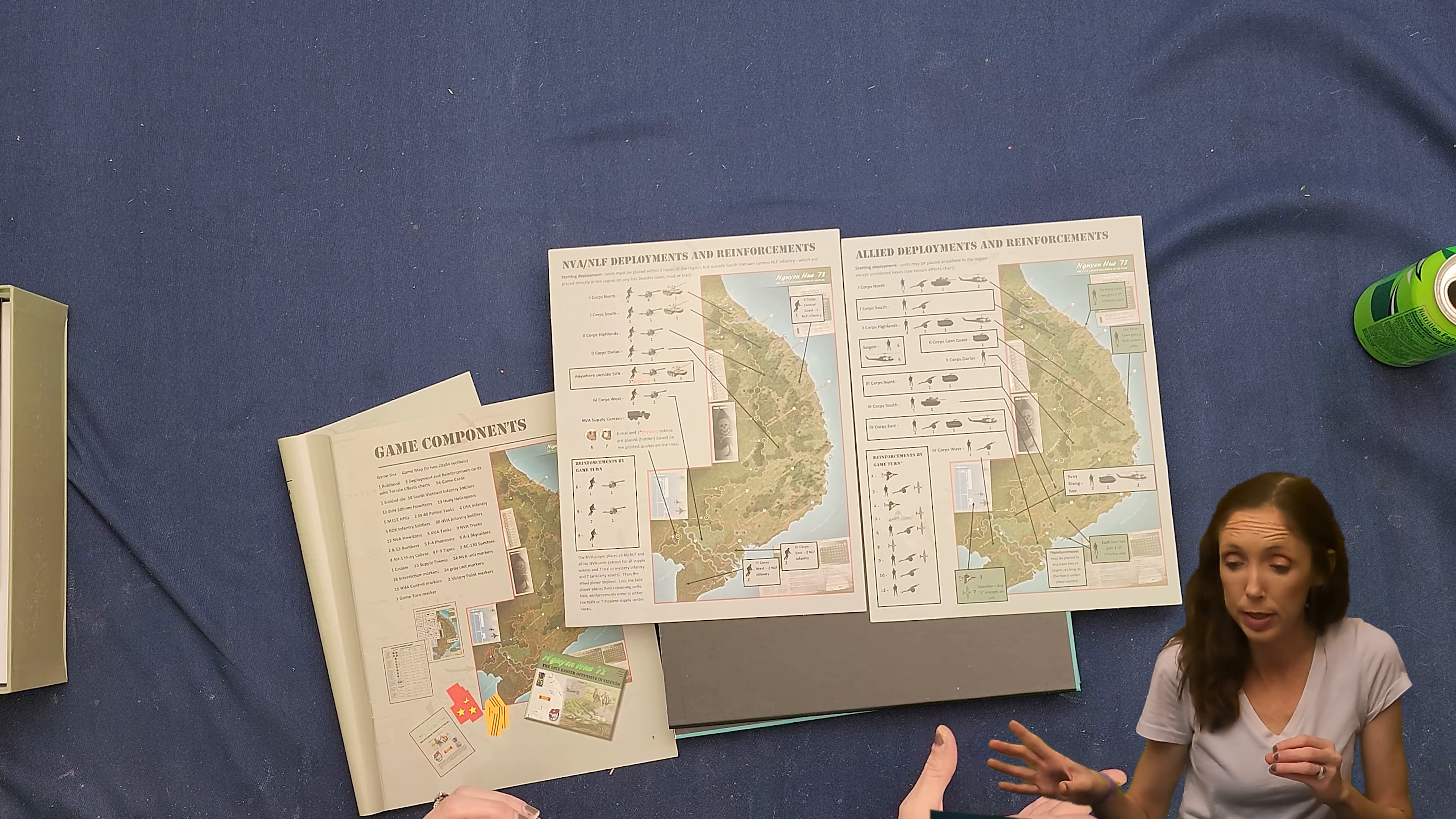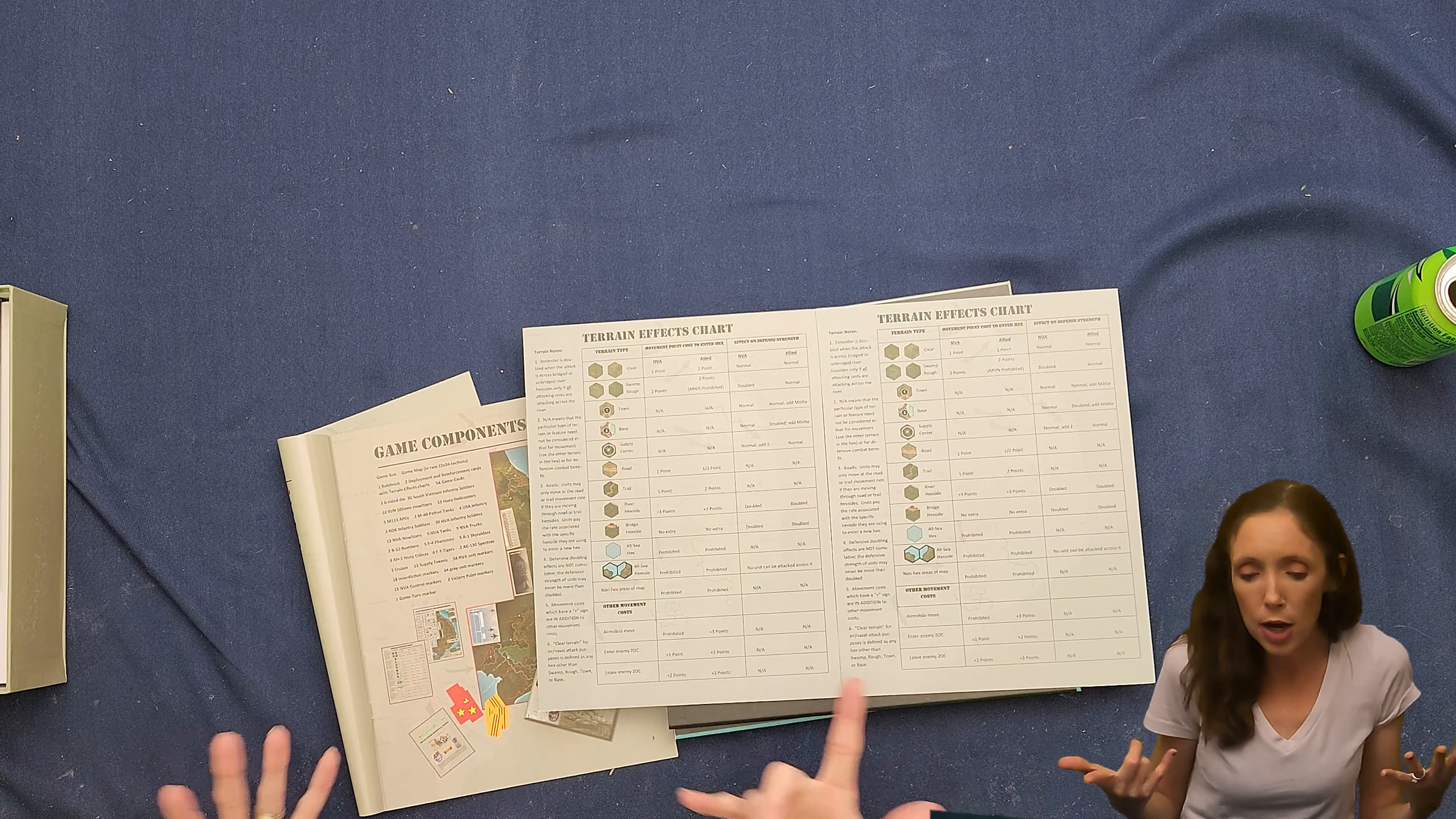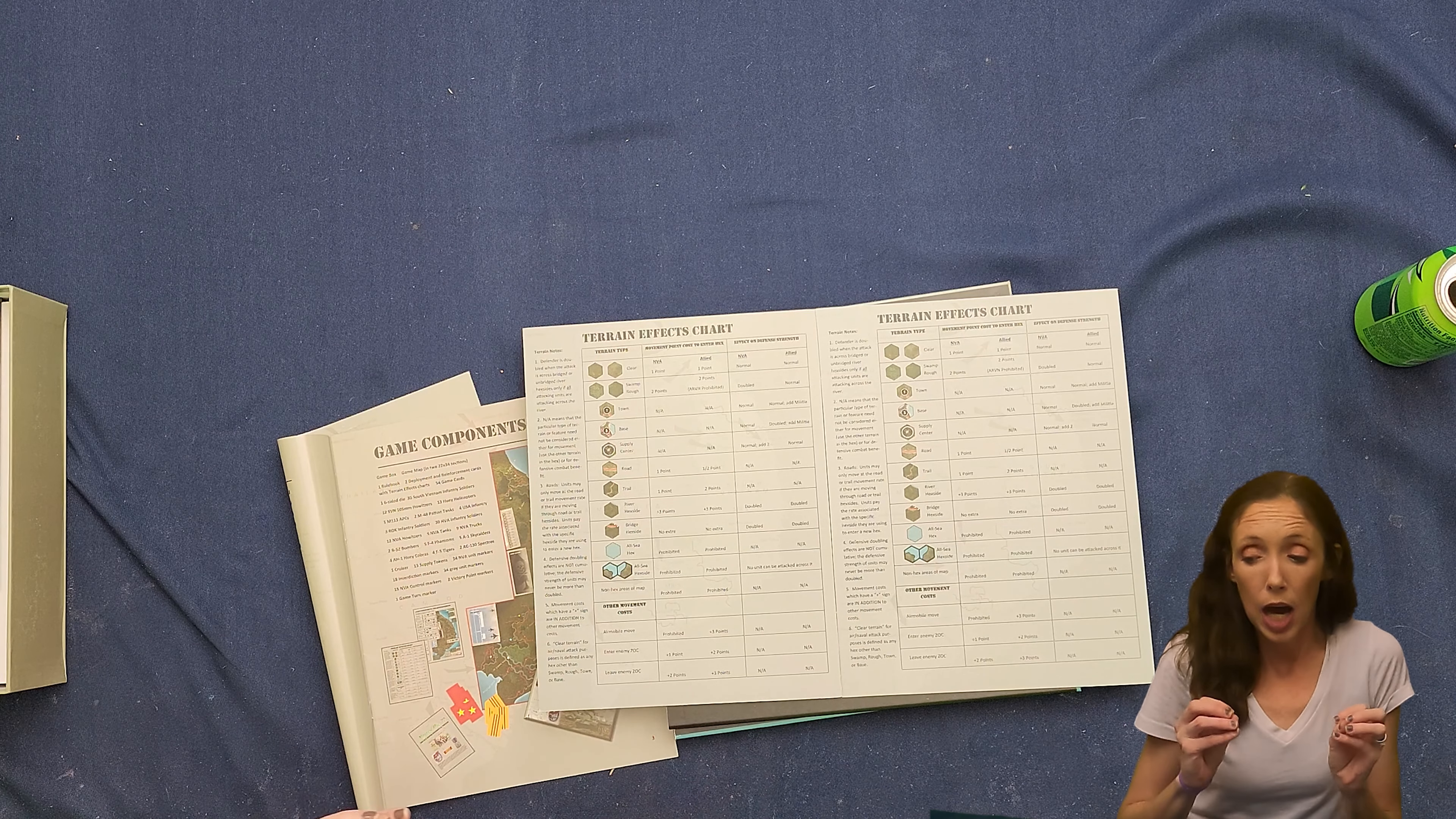So this is the NVA, whatever, NLF one. This is the allied one. And these are the deployment and reinforcement charts, maps, cards, whatever you want to call them. And then on the back, there is a terrain effects chart so that each side can know what each thing on the map means, what it does to affect your game, affect your movement, affect your battle attacks, blah, blah, blah.